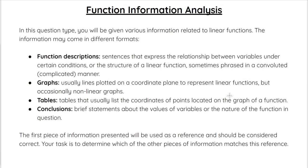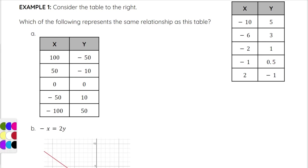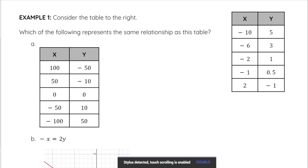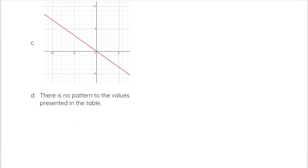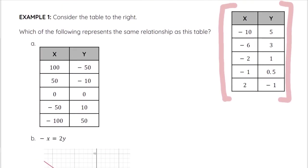So let's go ahead and take a look at an example. I do want to remind you that you're always going to come back to that first piece of information that was given, and that's what we're comparing our answer choices to, to see which one matches. Looking at this example, we want to consider the table to the right — that's our reference. Answer choices A, B, C, and D are what we are comparing to this given table to see which one represents the same relationship shown in the original table.